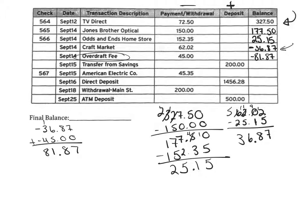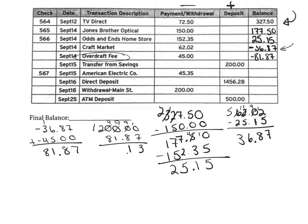But now we're going to add $200 to that. One is negative and one is positive, so we're actually going to subtract them. The bigger number goes on top, and after borrowing through the calculation we get $118.13.